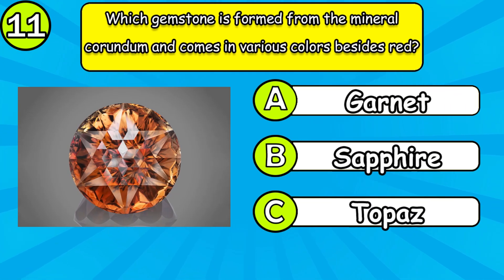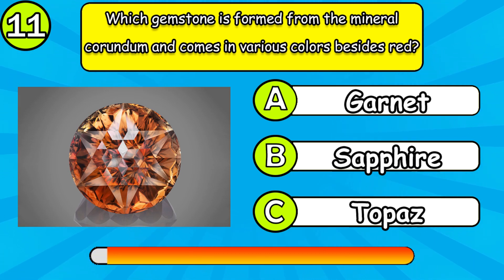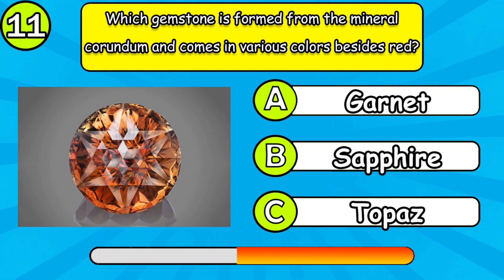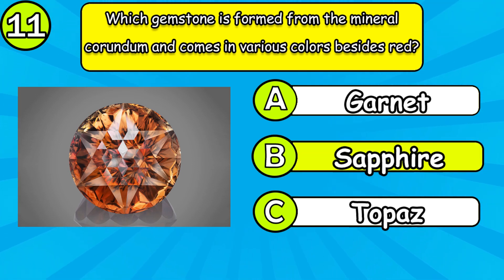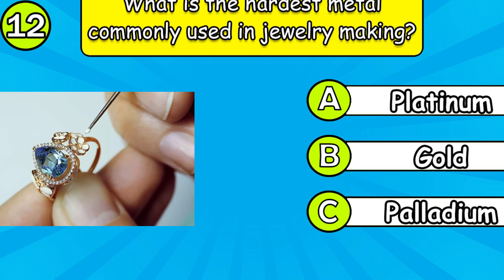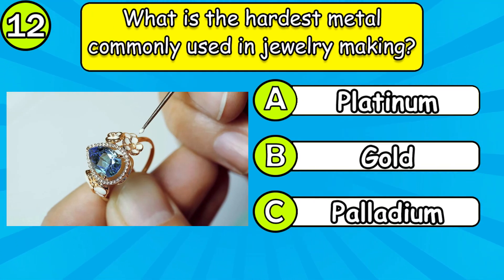Which gemstone is formed from the mineral corundum and comes in various colors besides red? What is the hardest metal commonly used in jewelry making?